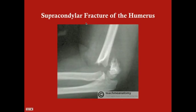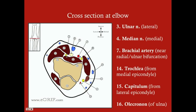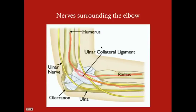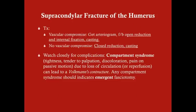To summarize the supracondylar fracture of the humerus: it results from a fall with a hyperextended arm, occurring in children due to ligamentous laxity. You'll see typical fracture symptoms and must look out for neurovascular complications. X-ray is the best initial step. If distal pulses are lost, get an arteriogram. Loss of nerve innervation also needs further investigation. If you have any questions, feel free to ask.